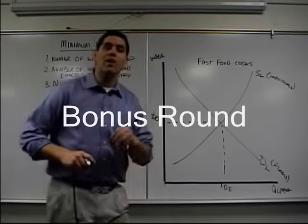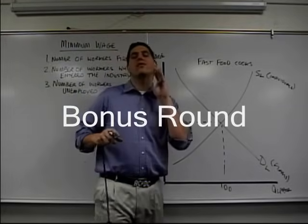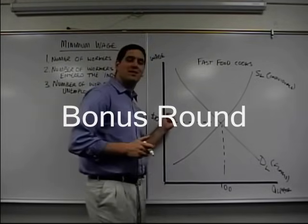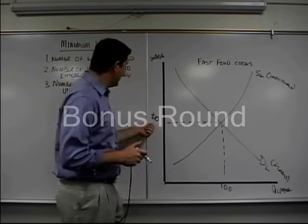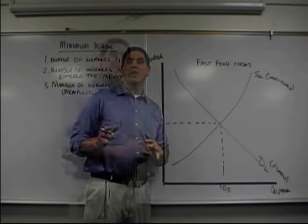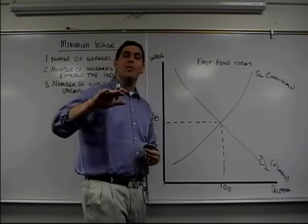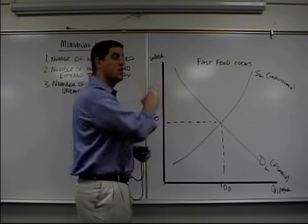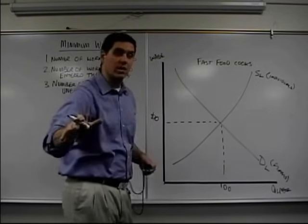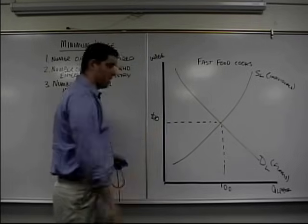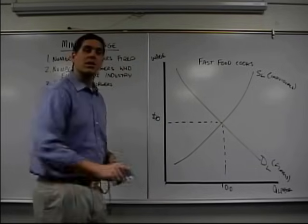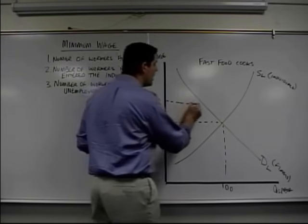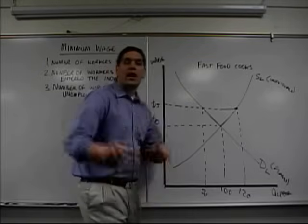Here we go — bonus round. Now it's time to talk about minimum wage. The government comes in and says, listen, $10 is just not enough to live on. The government says we've got to put in a wage floor. It's like a price floor, except now it's with wage. The question is where is it going to go — above or below equilibrium? It's going to go above.